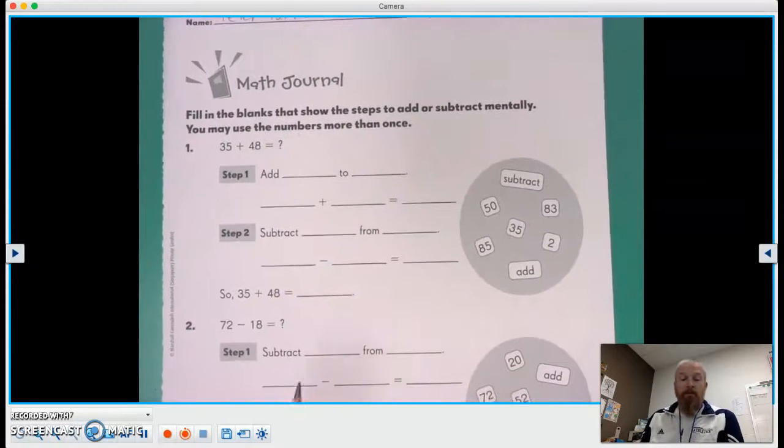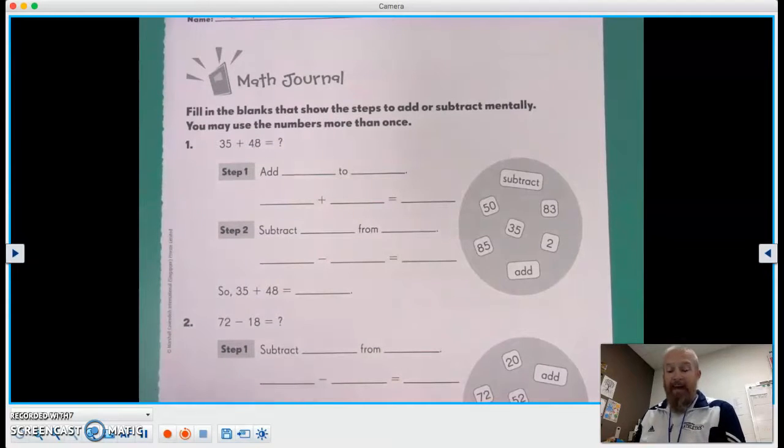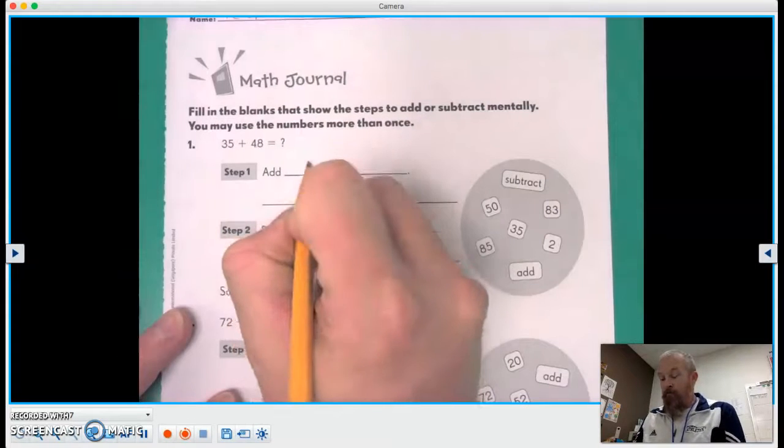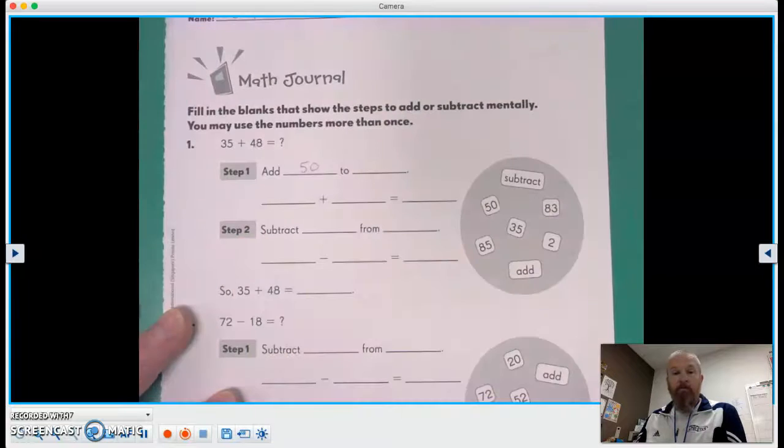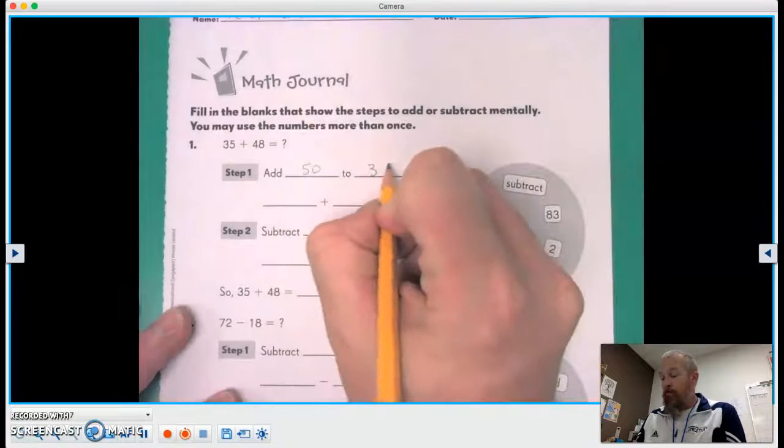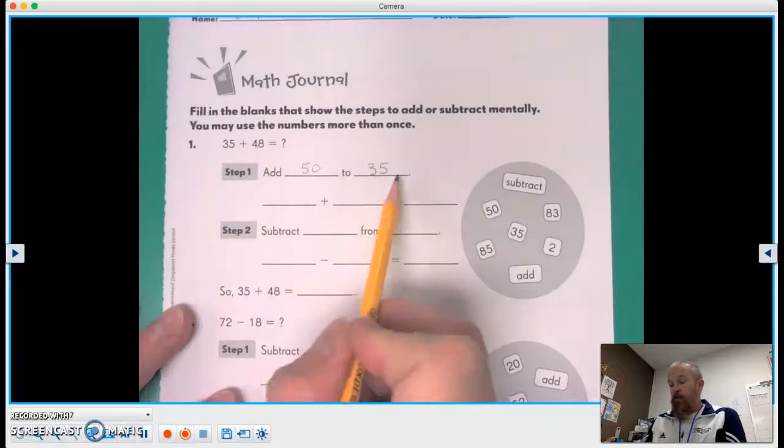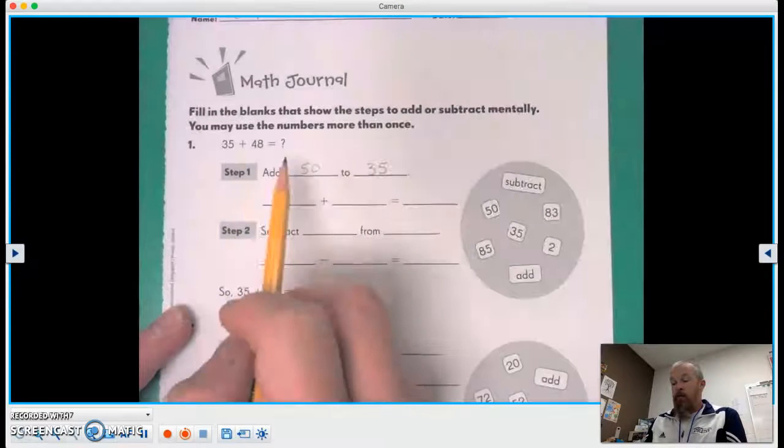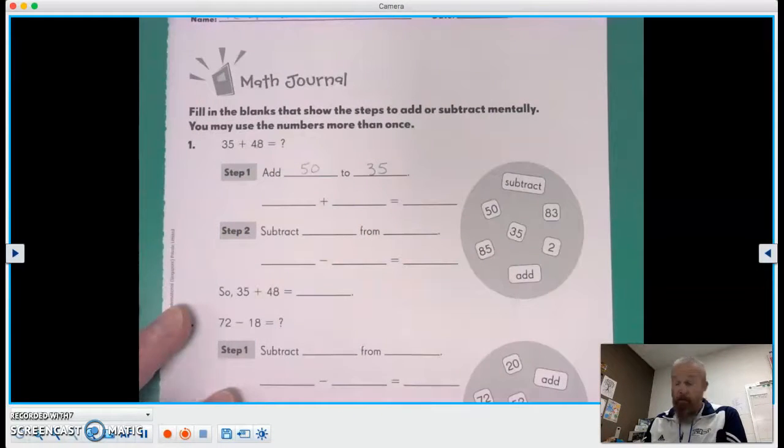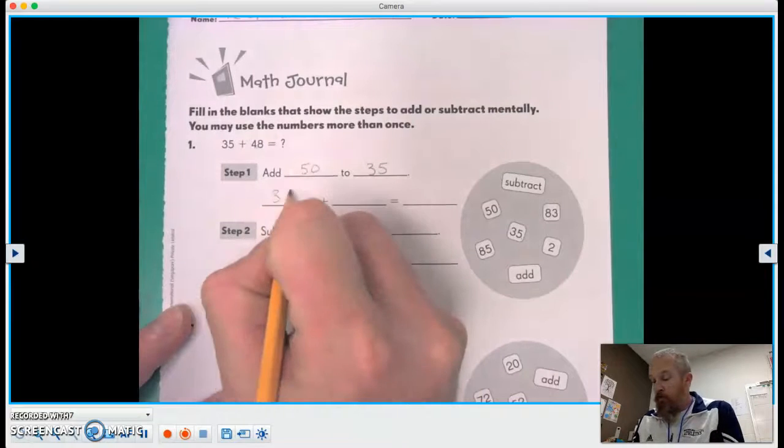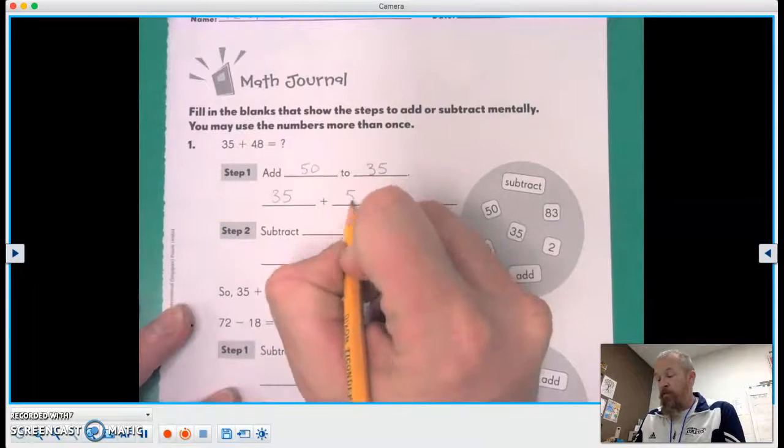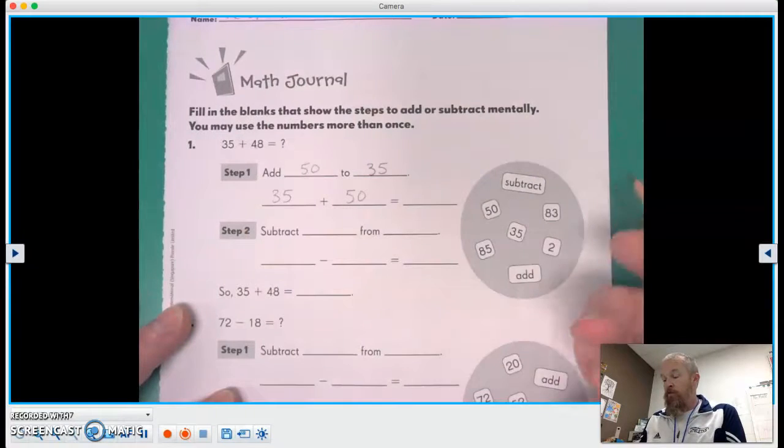So the first thing we're going to do is let's go ahead and add 50 to 35. So we're gonna take one of our numbers there, 35, and we're gonna add 50 instead of 48. So 35 plus 50 equals 85.